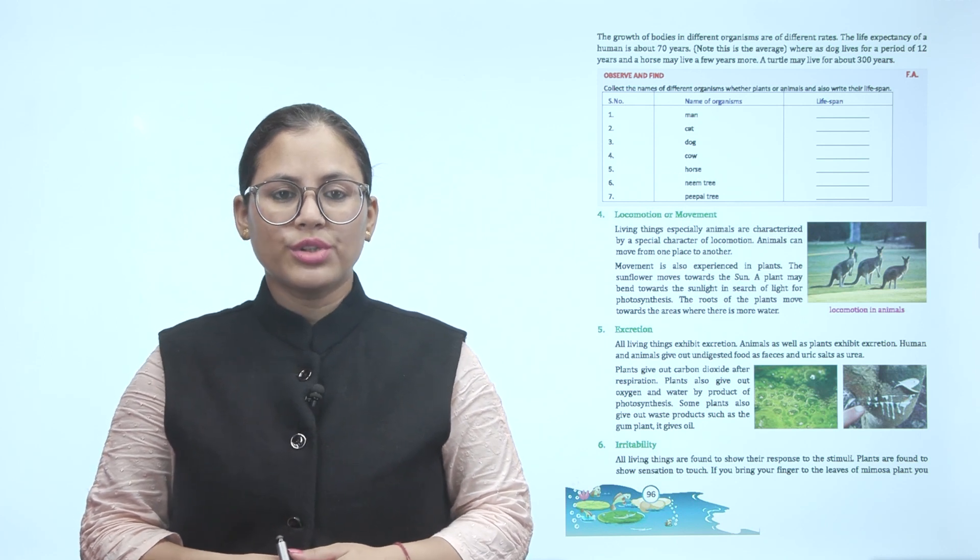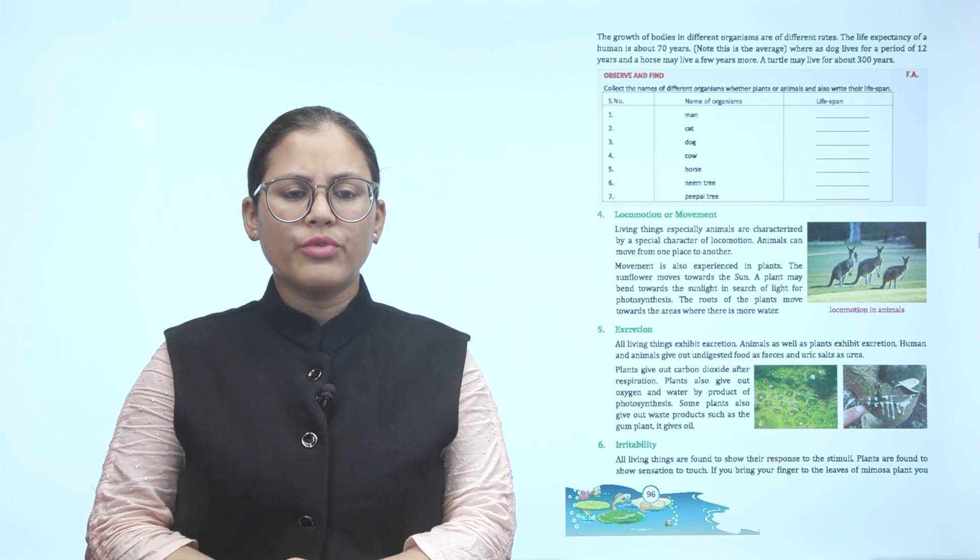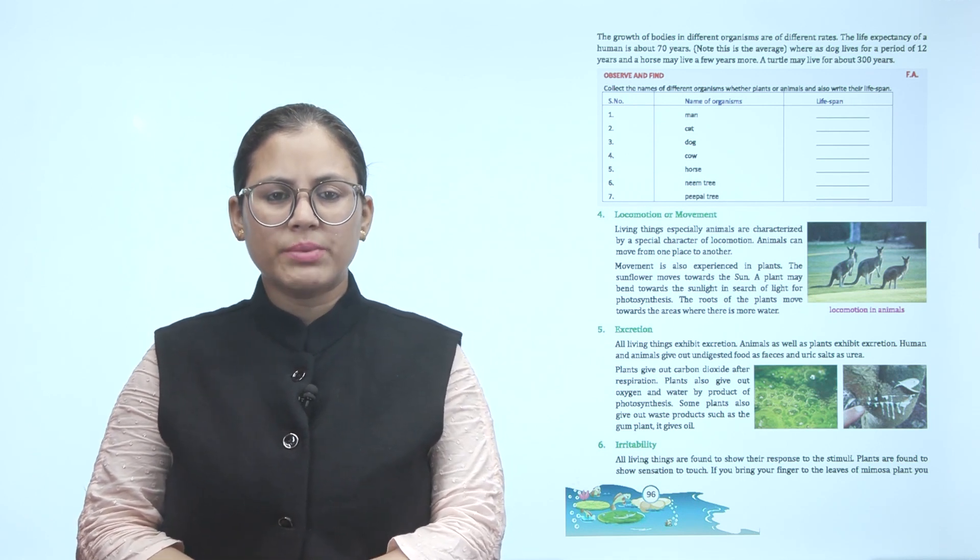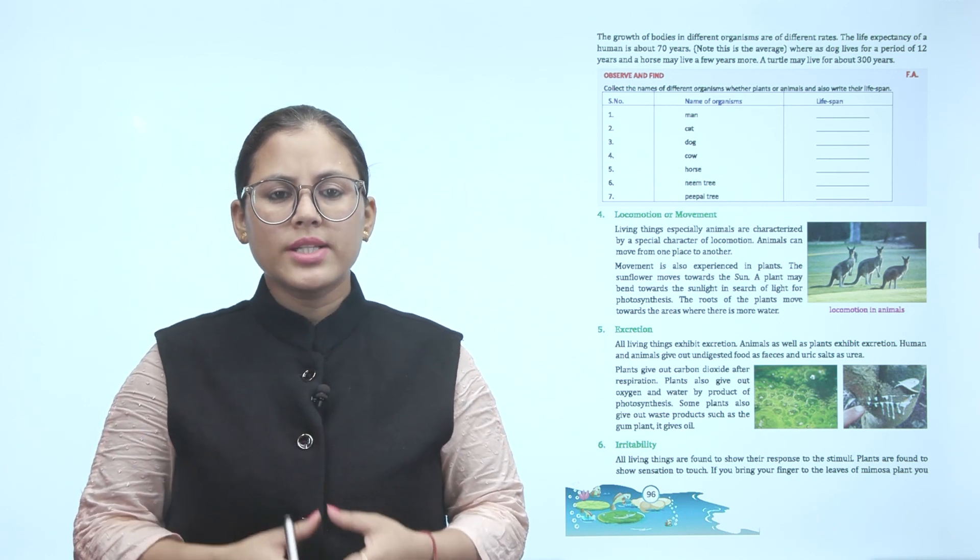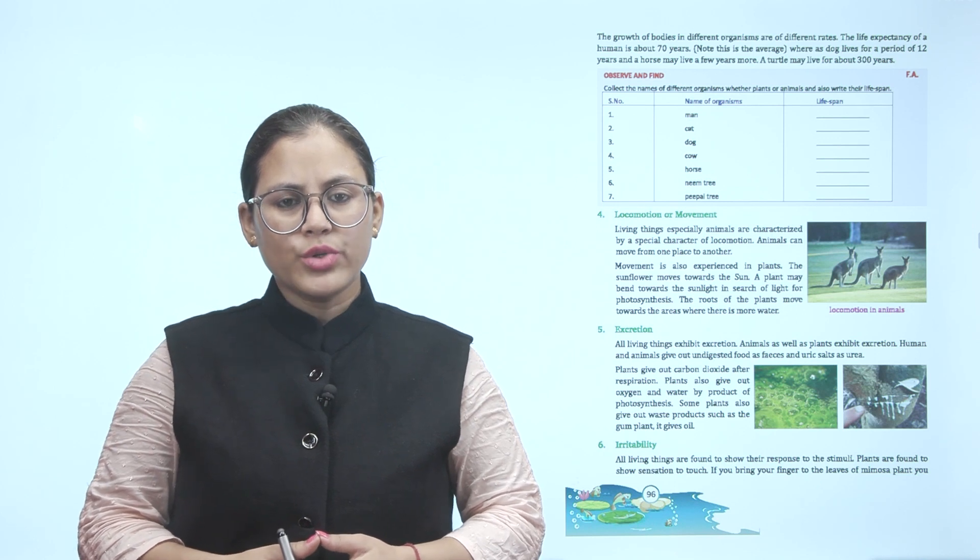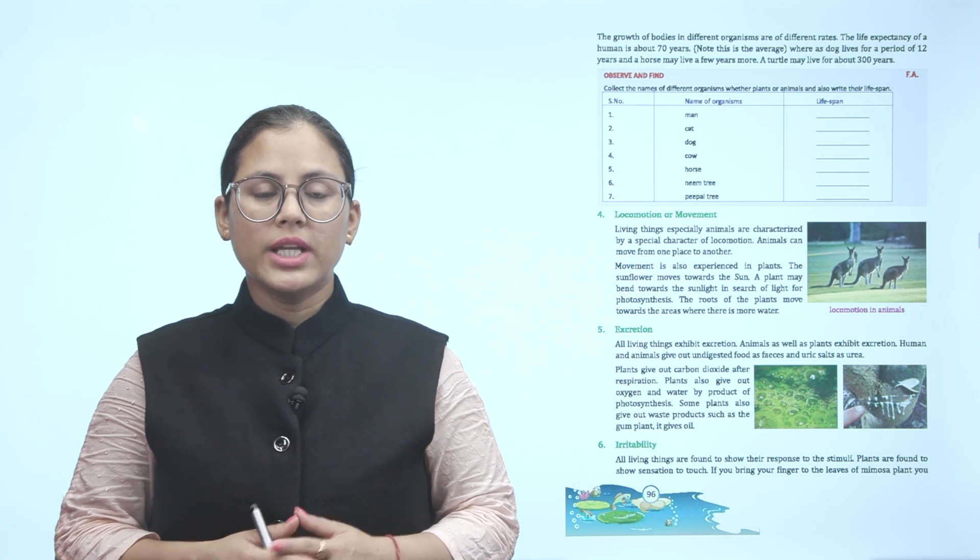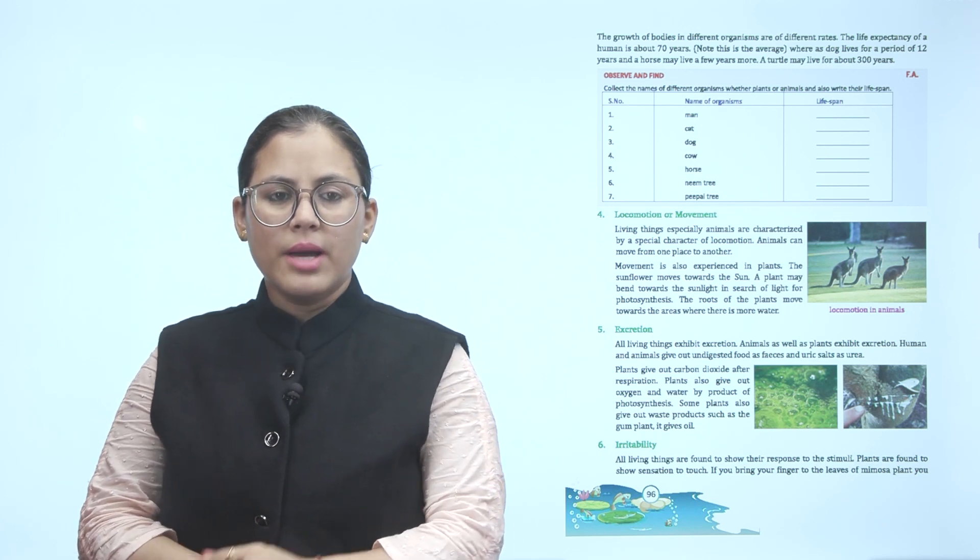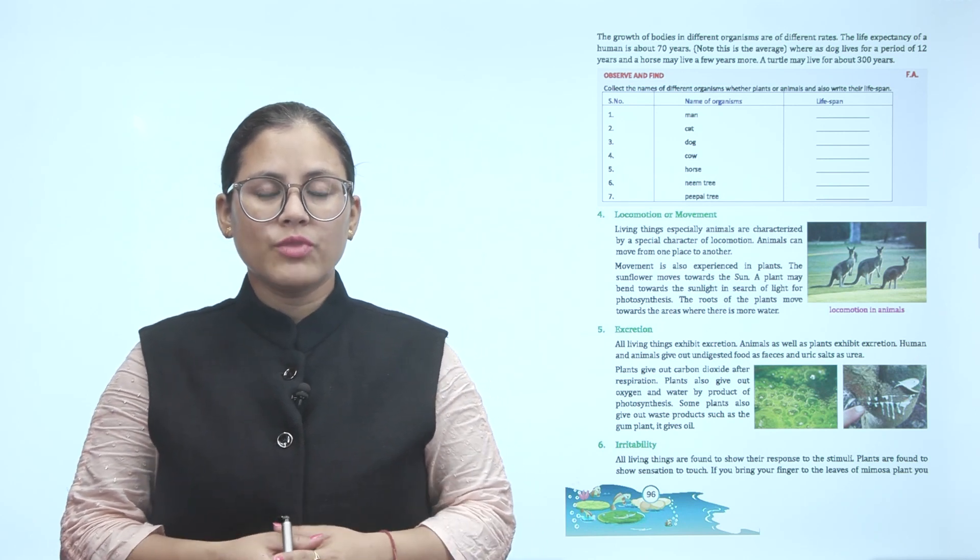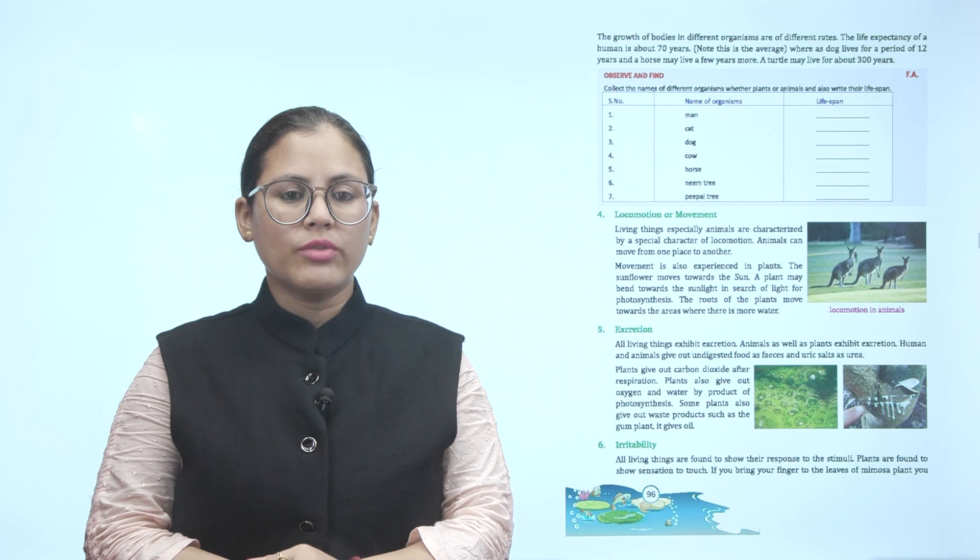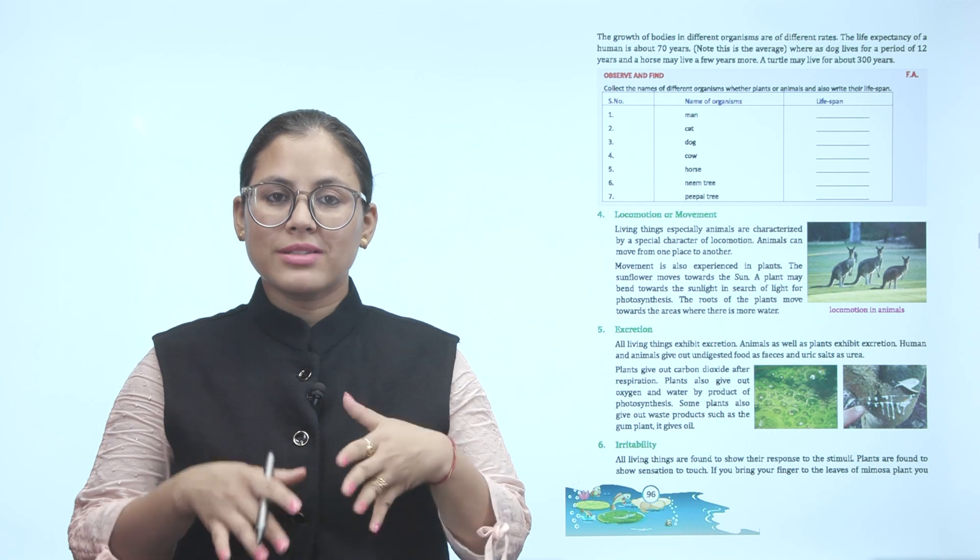Next is locomotion or movement. Living things, especially animals, are characterized by a special character of locomotion. Animals can move from one place to another. Movement is also experienced in plants. The sunflower moves towards the sun. A plant may bend towards the sunlight in search of light for photosynthesis. The roots of the plants move towards the areas where there is more water. Living things show movement from one place to another. In plants you can also see movement, like the sunflower turning its face to the sun. The roots of plants go to areas where there is more water.